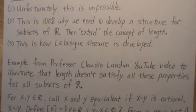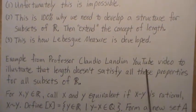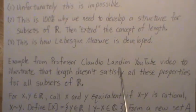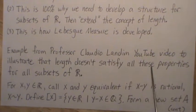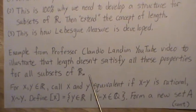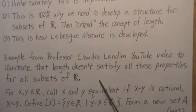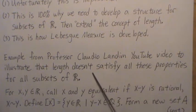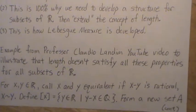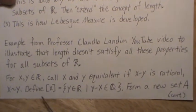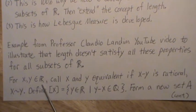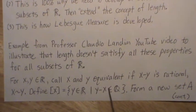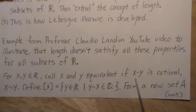I want to show you an example of why this doesn't work for all subsets. It's inspired by a YouTube video from Professor Claudio Landon and illustrates that length doesn't satisfy all these properties for all subsets of R. This is the classic example of a subset of R that is not Lebesgue measurable, and again why we have to develop this rich structure of subsets of R.